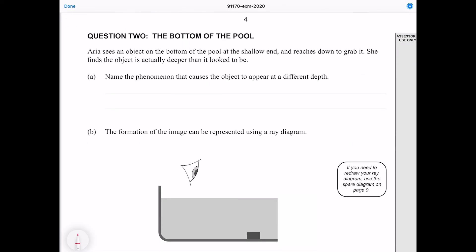Question 2: Aria sees an object on the bottom of the pool at the shallow end and reaches down to grab it. She finds that the object is actually deeper than it looked to be. Name the phenomenon that causes the object to appear at a different depth. The phenomenon is of course refraction. Going into the exam, this is a situation you should be already familiar with. If you're not, then what you need to look up is a concept called apparent depth.